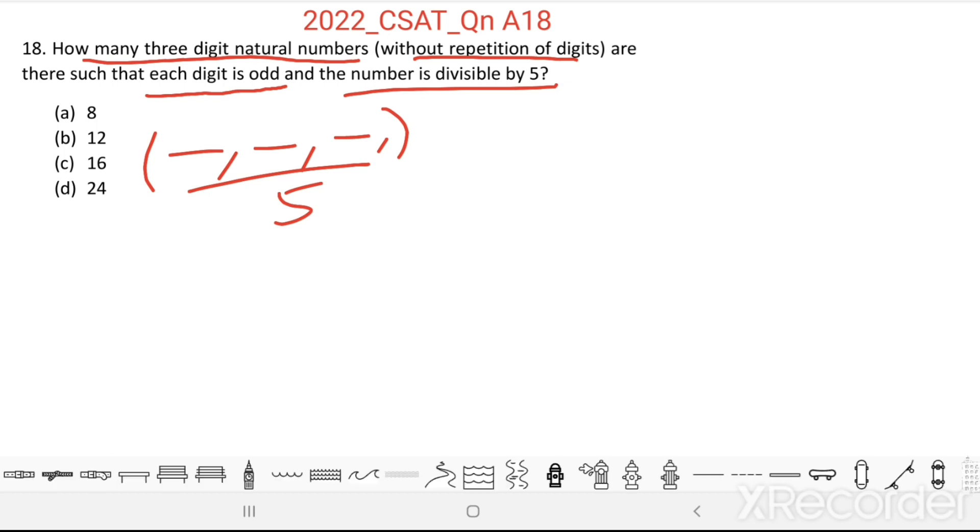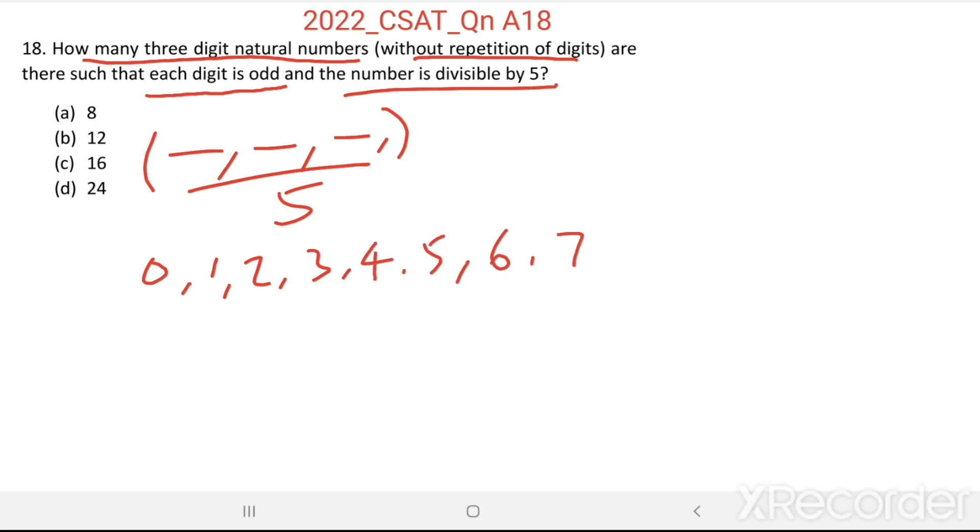We know there are 10 digits: 0, 1, 2, 3, 4, 5, 6, 7, 8, 9. In this, 1, 3, 5, 7, and 9 are odd digits.